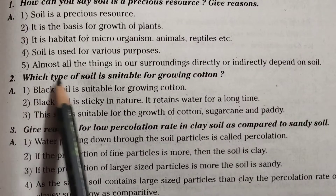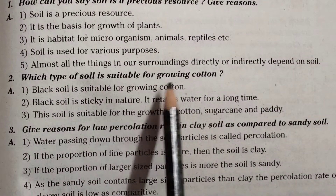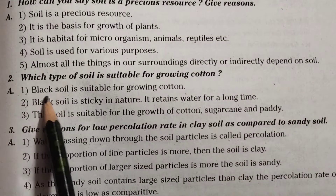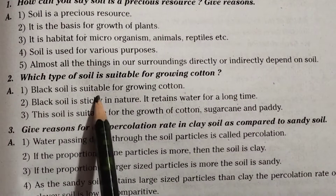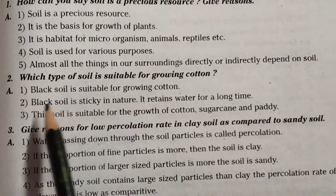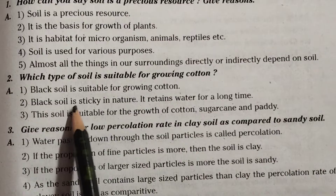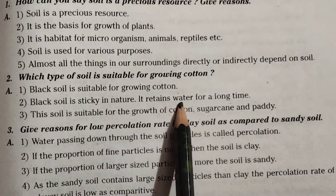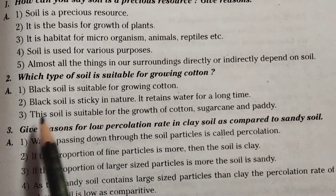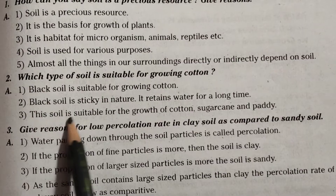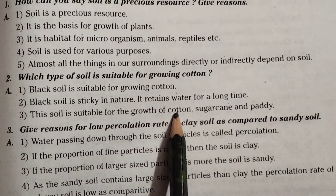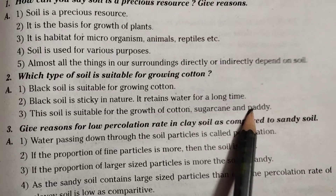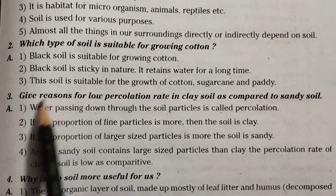Second one: Which type of soil is suitable for growing cotton? Answer: Black soil is suitable for growing cotton. Black soil is sticky in nature. It retains water for a long time. This soil is suitable for the growth of cotton, sugarcane, and paddy.